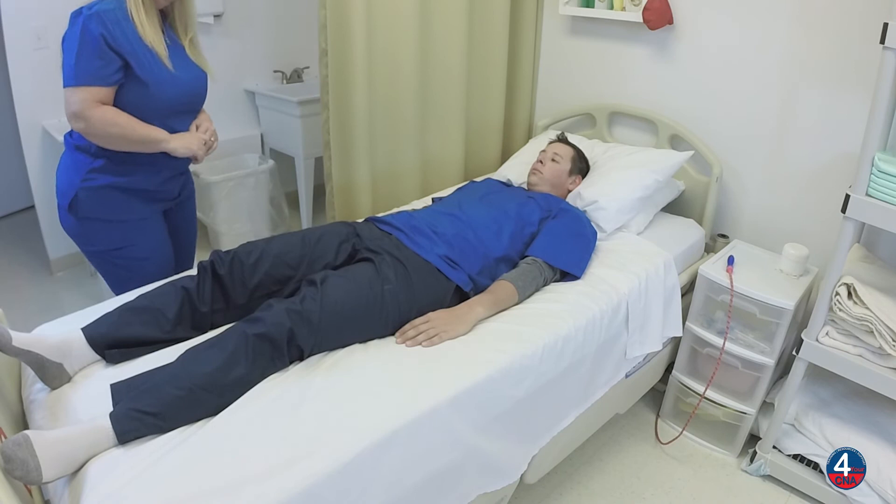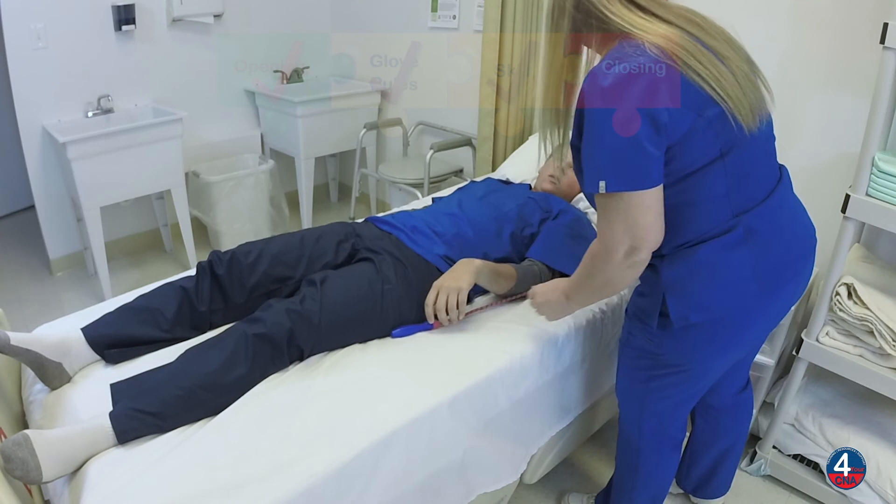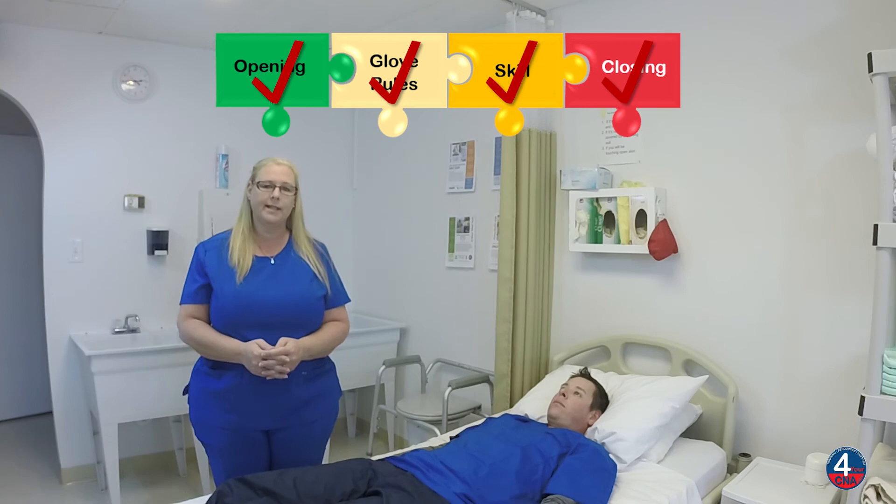Is there anything else I can get for you while I'm here? Let me get your call light for you and I'm going to open the curtain. Here's your call light — if you need anything at all, please let me know. I'm going to go wash my hands. After washing my hands, I'll review the steps of my skill, make any corrections, and tell the evaluator my skill is done.